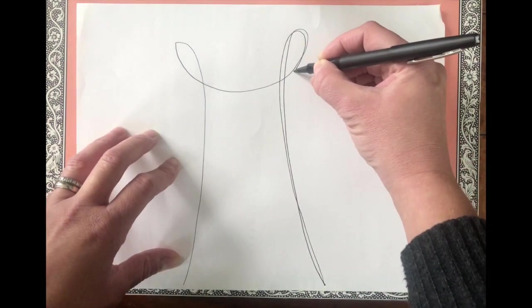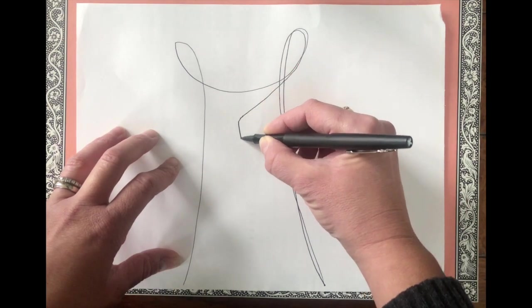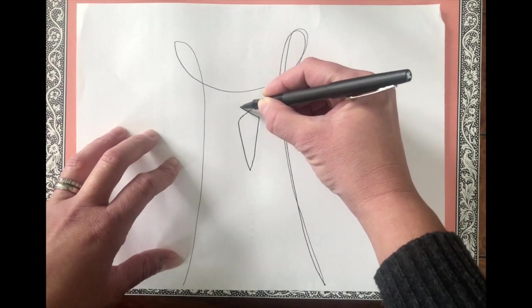I like to retrace my same line. All right, so here's where it gets tricky. You're going to go down, make like a point like a triangle for his beak.